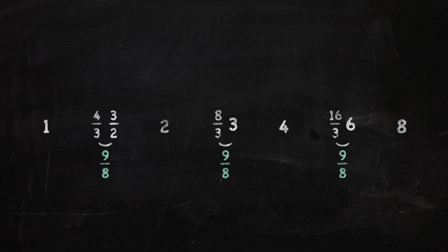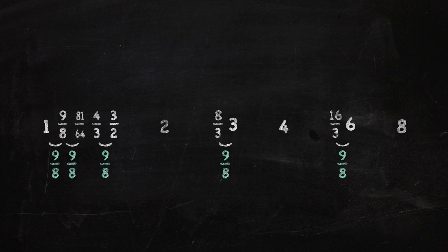Starting this process from our first length, 1, we generate the quantities 9 over 8, then 81 over 64. Remember to multiply by 9 over 8, not add. And then we get a remainder interval between 81 over 64 and the harmonic mean, 4 over 3. This is less than 9 over 8. In fact, it's 256 over 243. This is the same remainder we get if we fill in the harmonic intervals between 2 and 4 and between 4 and 8, and so on.